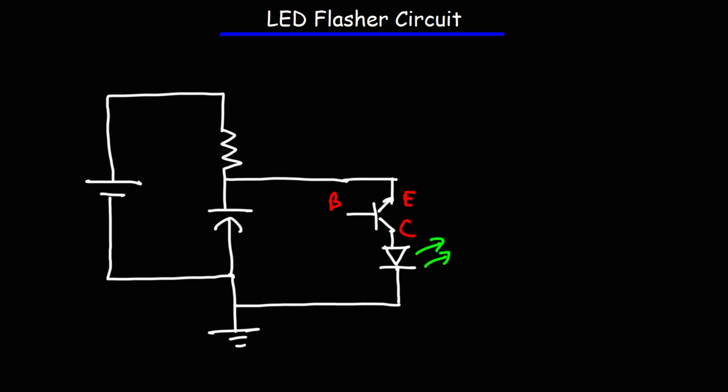Now, the way this circuit works is due to a phenomenon known as negative resistance. Now, you might be wondering, what is negative resistance? Well, let's talk about positive resistance. Based on Ohm's law, as you increase the voltage, the current increases. So when dealing with positive resistance, there's a direct relationship between voltage and current.